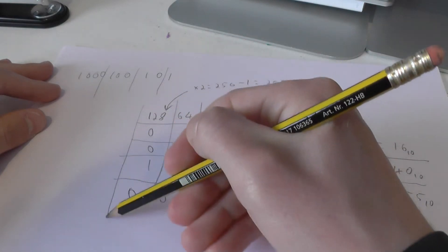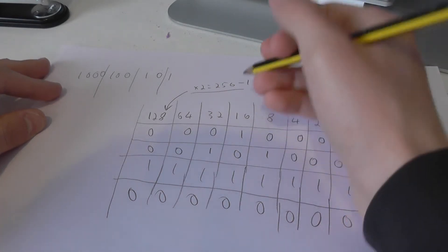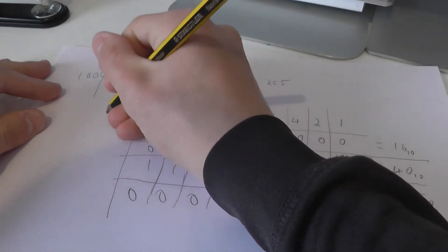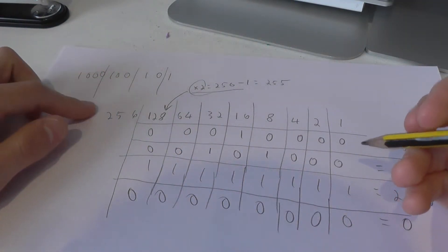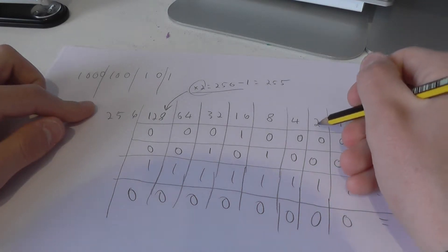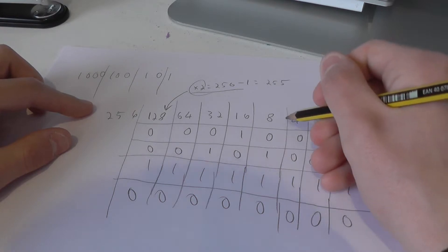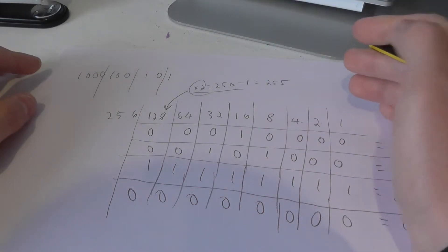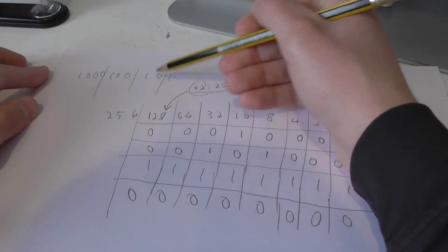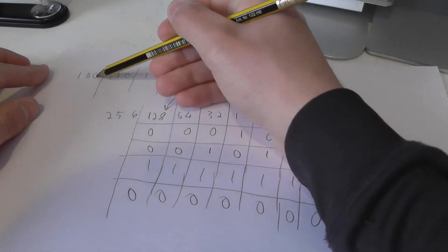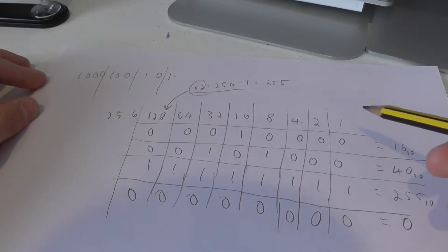That automatically tells me that the next column here is 256, simply because 2 times 2 is the next column, that's 4. 2 times 4 is the next column, that's 8. That's how it works in binary, whereas base 10, like I said before, 1 times 10 is 10. 10 times 10 is 100. 100 times 10 is 1,000. 1,000 times 10, the next column is 10,000.